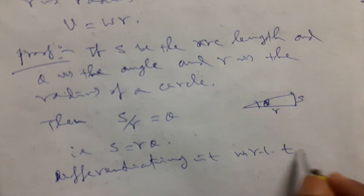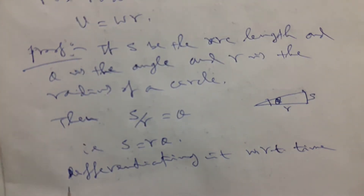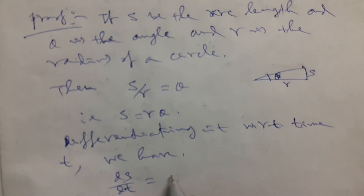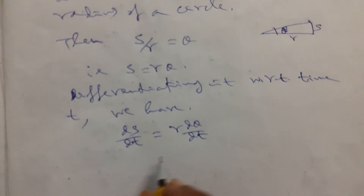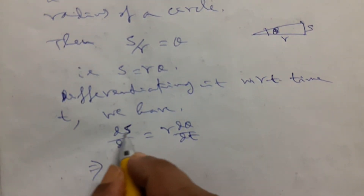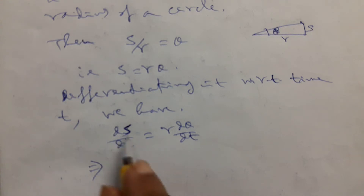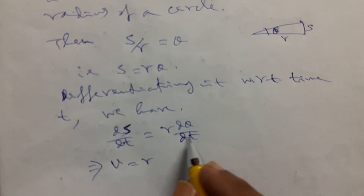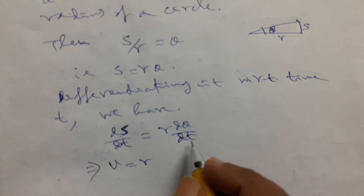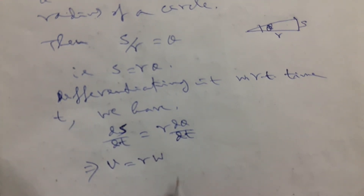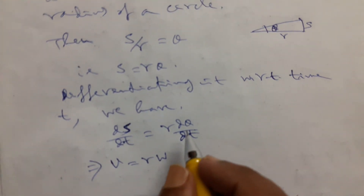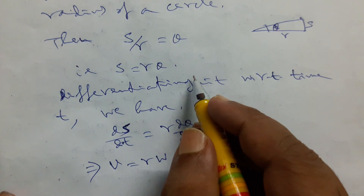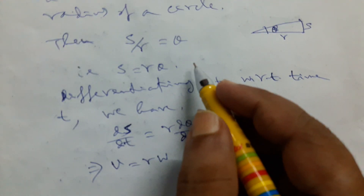with respect to time t, we have dS/dt equals r into d theta/dt. Now it is clear: the change of displacement with respect to time is linear velocity V, and d theta/dt is the change of angular velocity with respect to time, so it will be omega. So finally we prove V equals omega r. This is an interesting result and sometimes we use it for many purposes. We end our discussion, thank you.